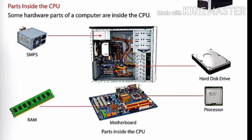There is an image on your screen. Some hardware parts of a computer are inside the CPU. They are: SMPS, RAM, motherboard, processor, and hard disk drive. Now we are going to read about these parts.